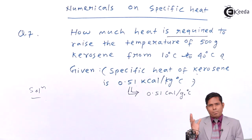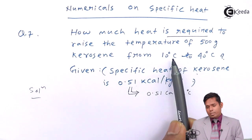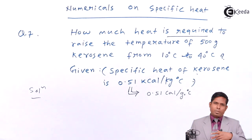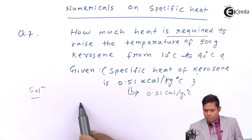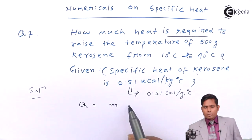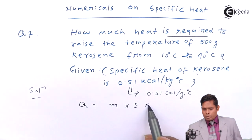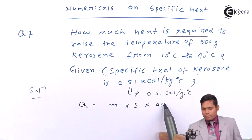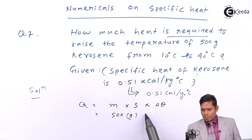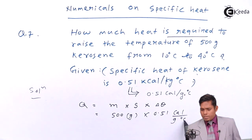Then 500 grams is there, so multiply by 500. The mass is multiplied with specific heat. And then 10 to 40, the difference is 30 degrees. To increase by 1 you require this value; to increase by 30, multiply by 30. So the solution is: heat required equals mass of the substance into specific heat into rise in temperature. Therefore 500 gram into specific heat 0.51 kilocalorie per gram degree centigrade.